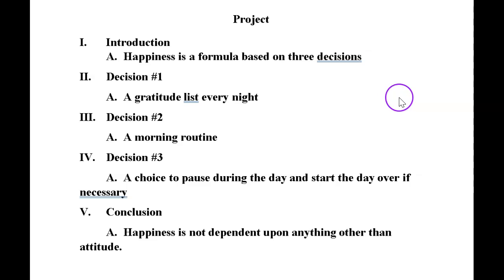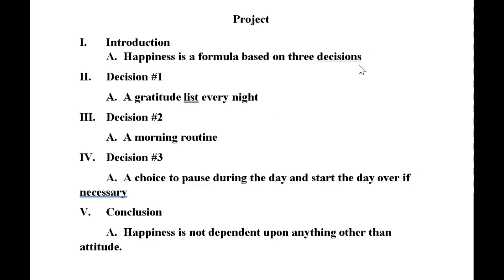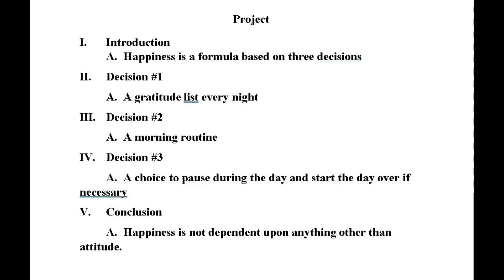We know that this essay is about happiness, and the claim of the essay is that happiness is a formula based on three decisions. What are those three decisions? Remember the rule of three. One: a gratitude list every night. Two: a morning ritual. Three: a choice to pause during the day and even start the day over if necessary. The conclusion is that happiness is not dependent upon anything other than attitude.